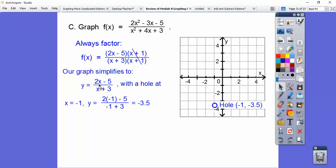So I plug in negative 1 right there and negative 1 right there to get our y. So I get negative 3.5. So there's a hole at negative 1, negative 3.5.